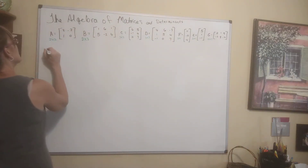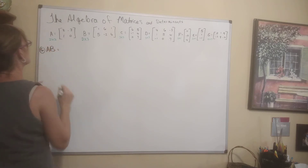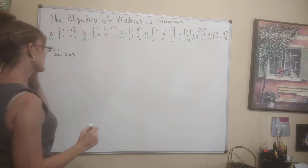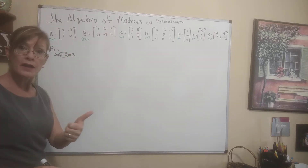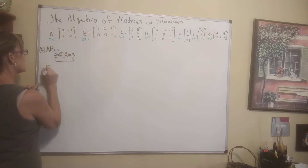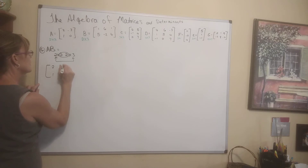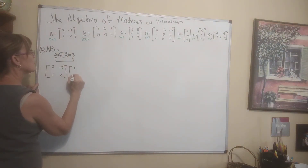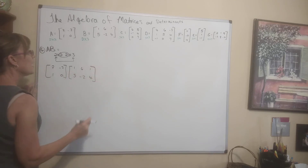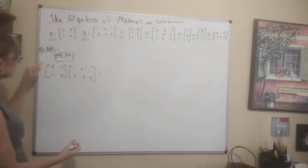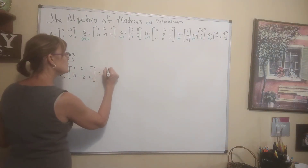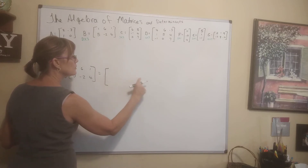Let's multiply A times B. A is 2 by 2 and B is 2 by 3 — the inner dimensions match, so the result will be a 2 by 3 matrix. I'll write A as [2, 1; negative 3, 0] and B as [1, 5, 6; negative 2, 1, 4], and plan a 2 by 3 result matrix.